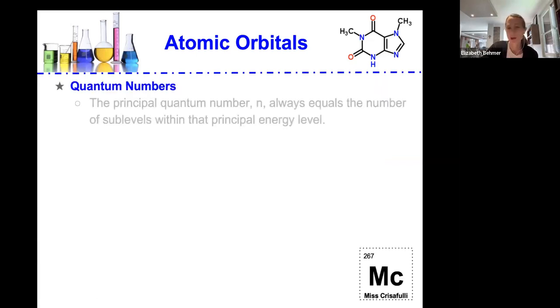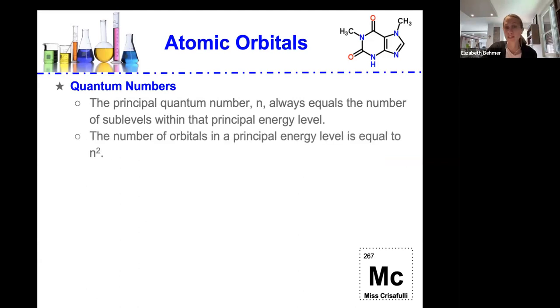The quantum numbers are the principal quantum number always equals the number of sub-levels within that principal energy level, as shown in that previous graph. And the number of orbitals in a principal energy level is always equal to n-squared. There's always a maximum of two electrons that can occupy an orbital.